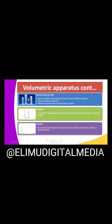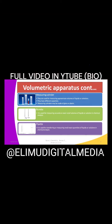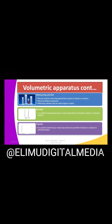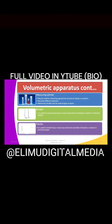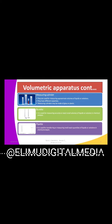We begin by looking at measuring cylinders. They are used for measuring approximate volumes of liquids or solutions, and they have different capacities. Measuring cylinders come in various capacities — we have capacities of 10 ml, 20 ml, 50 ml, and so on, and they are used on the basis of the volume they have to measure. Measuring cylinders may be made of glass or plastic.